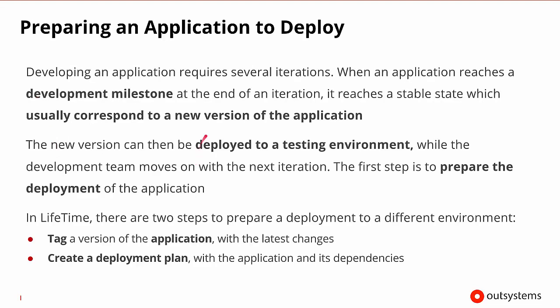When we're preparing an application to deploy, the application itself may be going through the development process. It will go through several different iterations. When it meets a key development milestone at the end of an iteration, that stable state would usually correspond to a new version of the application. That new version may need to be deployed to the testing environment while the development team moves on to begin working on the next iteration.